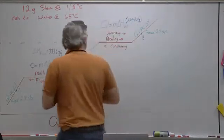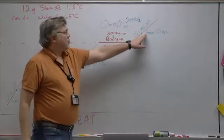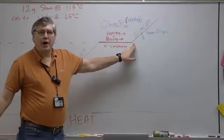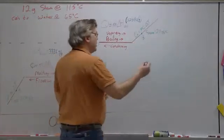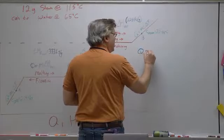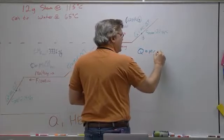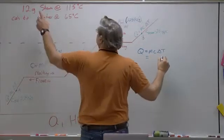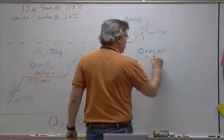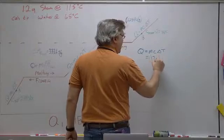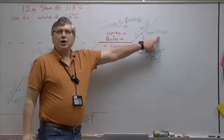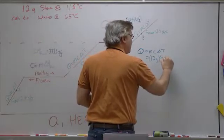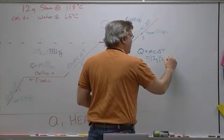So we have a couple of steps here. We start with steam, so the first thing we have to do is cool the steam down to 100 degrees Celsius. To do that, we're going to use Q equals MC delta T, and the mass of the steam that we said was 12 grams. The C for steam is 2.0 joules per gram degree Celsius.